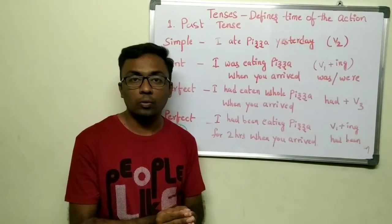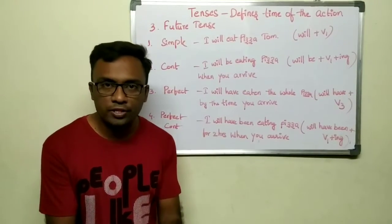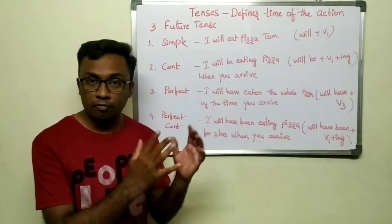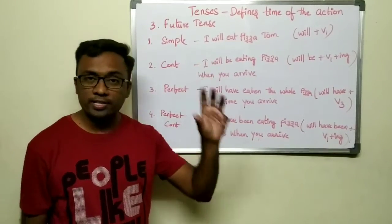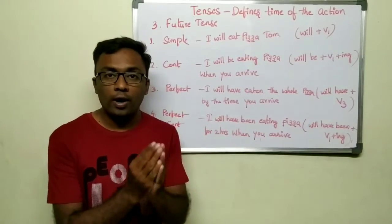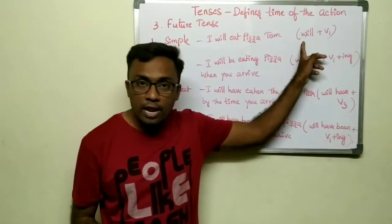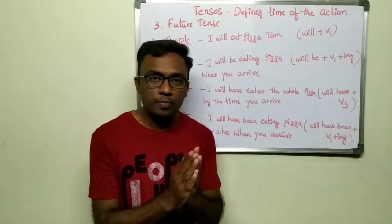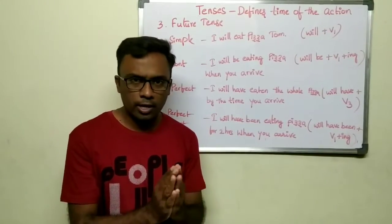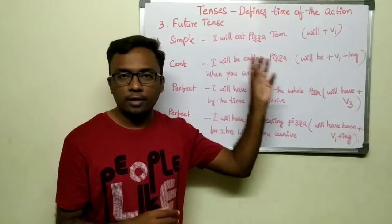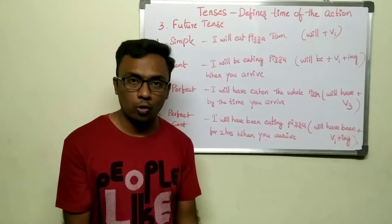Now let's move on to future tense — again the same four sub-states: simple future tense, future continuous tense, future perfect tense, and future perfect continuous tense. Simple future tense: 'I will eat pizza tomorrow.' You are describing an action you are going to do in the future. The structure is will + V1. Verb is V1; you just take the help of 'will.' If you are sure, use 'will'; if not sure, use 'shall' or 'may.'